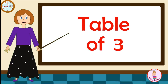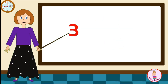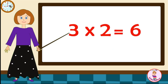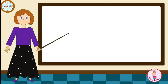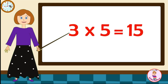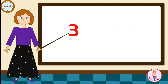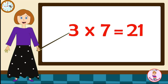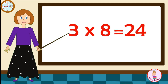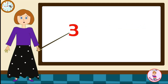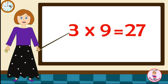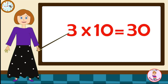Table of Three. Three-one's are three. Three-two's are six. Three-three's are nine. Three-four's are twelve. Three-five's are fifteen. Three-six's are eighteen. Three-seven's are twenty-one. Three-eight's are twenty-four. Three-nine's are twenty-seven. Three-ten's are thirty.